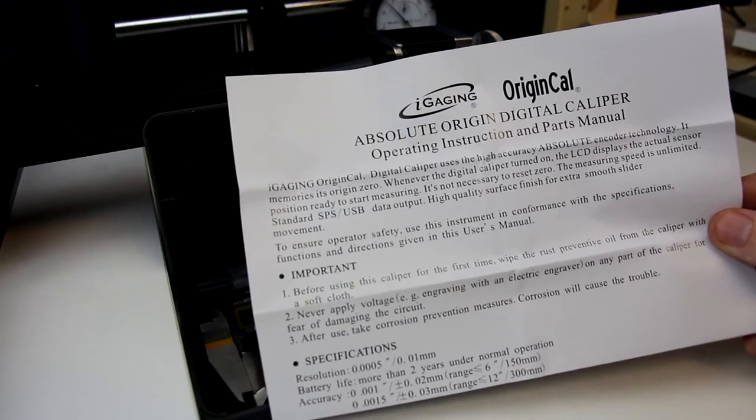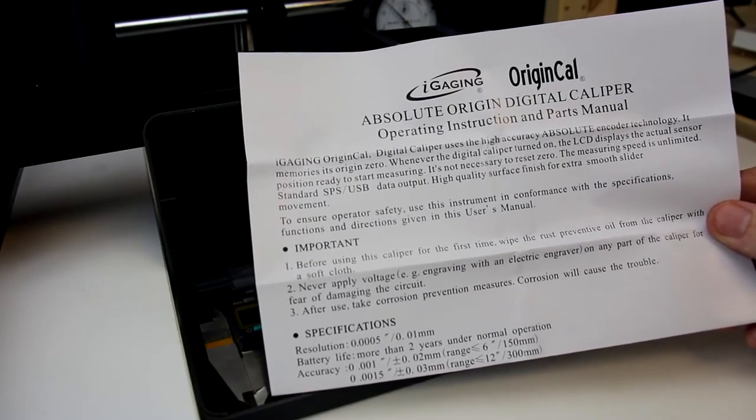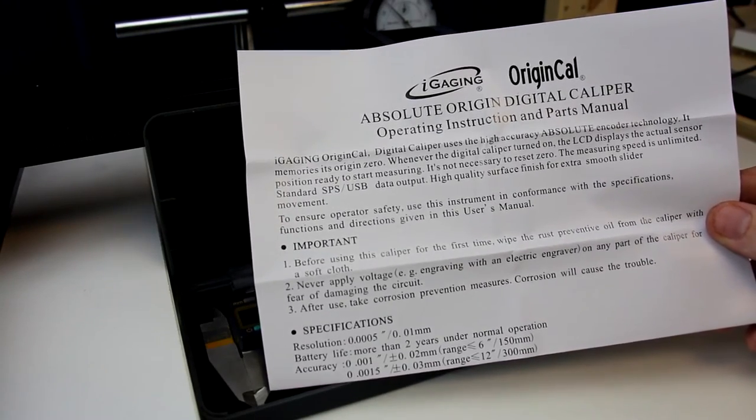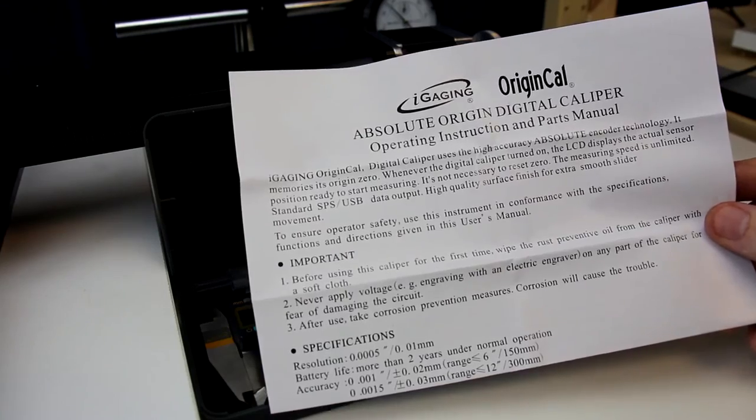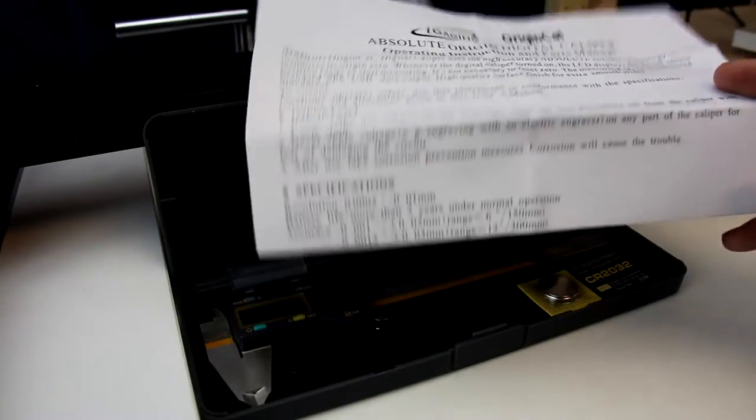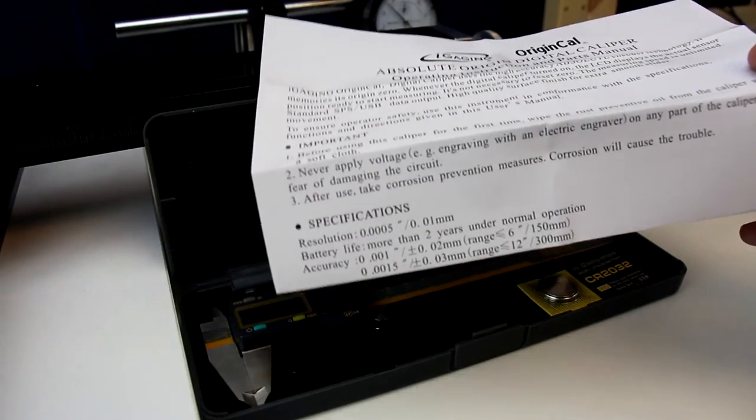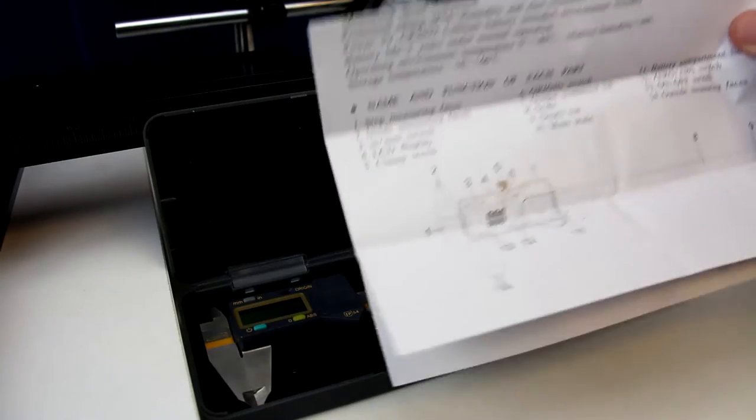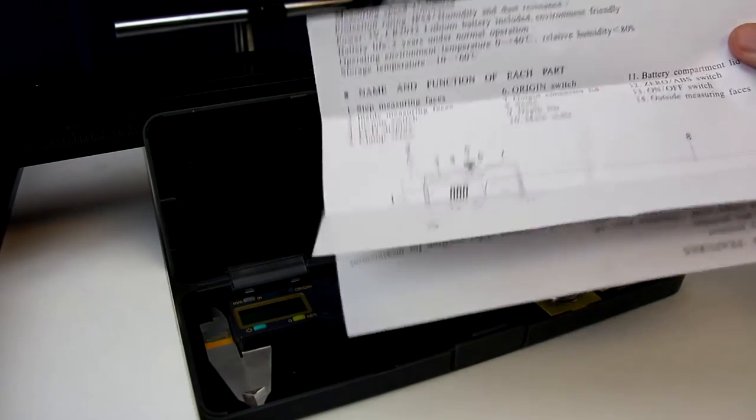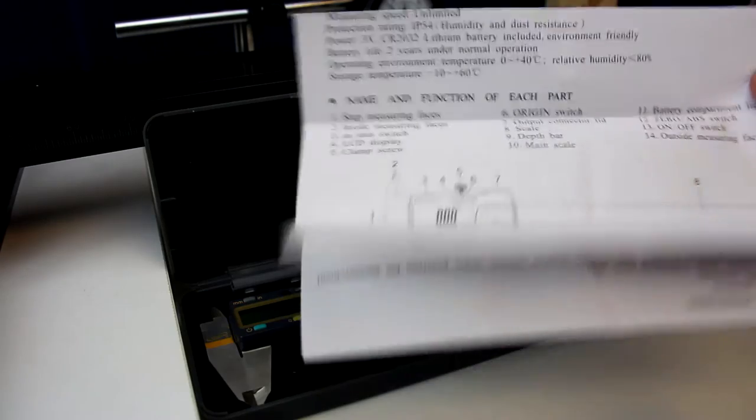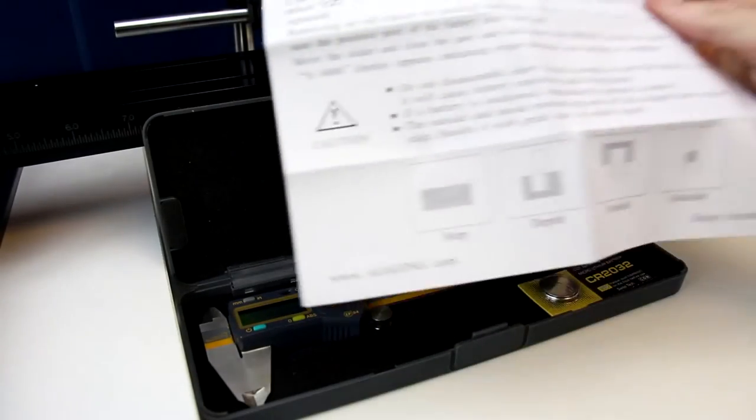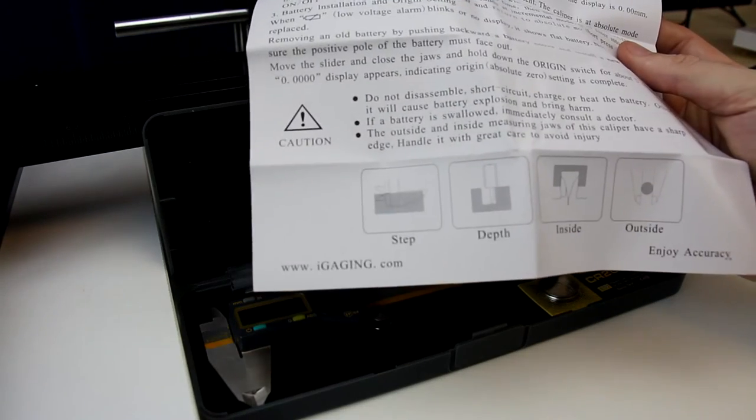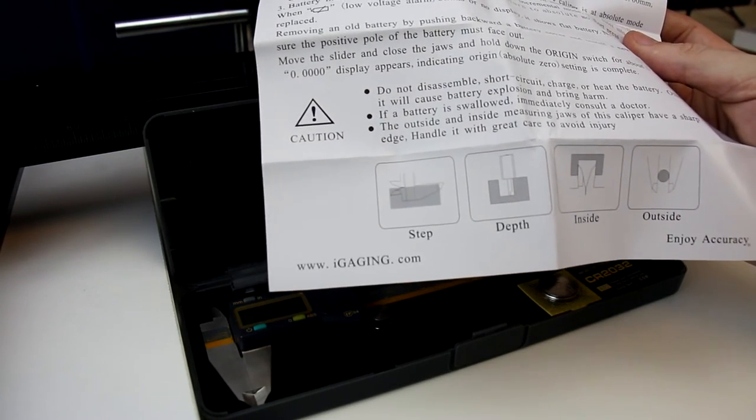Instructions that come with this speak to the specifications, the battery life, and the resolution as being half a thousandth or 0.01 millimeters. Just some of the operating instructions, pretty simple, and then continued on the reverse side as well on how to do different measurements, whether you're doing a step measurement, depth, inside, or outside measurements.